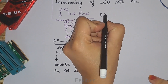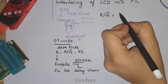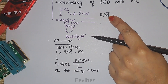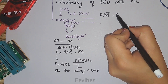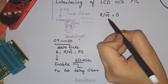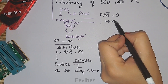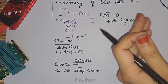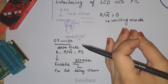Moving on, we have the Read/Write pin. Generally, since we are either issuing commands or data, we are writing into the LCD, so we make it equal to zero. The write function is active low, so when you send logic zero the LCD will be in writing mode, which means you are writing into the LCD — it can be data or commands.